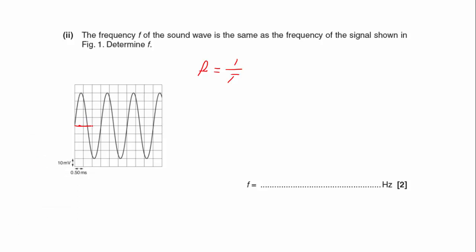Which is one, two, three divisions there. So the period is going to be three divisions at 50 milliseconds per division. So that's going to be 150 milliseconds. And the frequency is going to be one over that. So 1 over 3 times 50 times 10 to the minus 3, which is 6.7 Hertz.